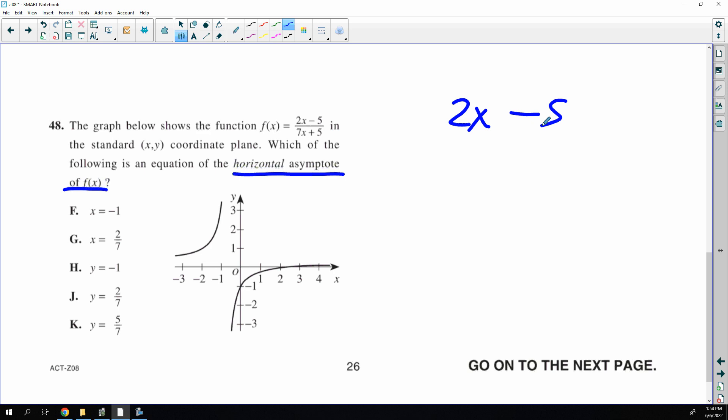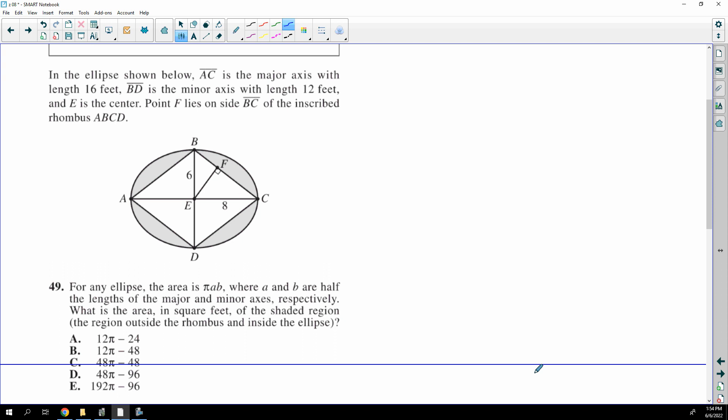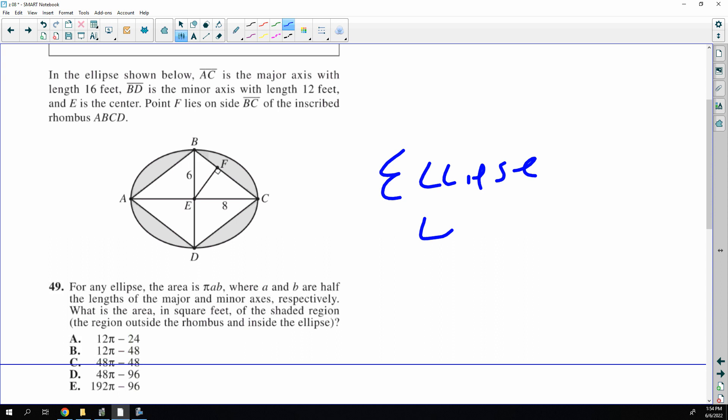Oldie but a goodie, a horizontal asymptote is the leading coefficients. So this is going to be tough if you haven't had it. That's the coefficients of the highest power. I don't know what else to say, it's a whole unit or discussion.